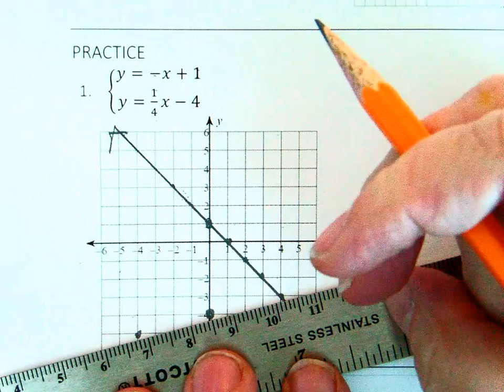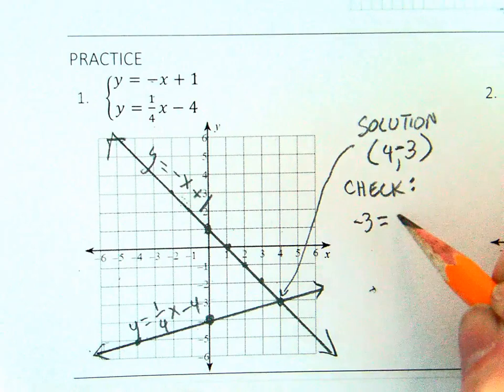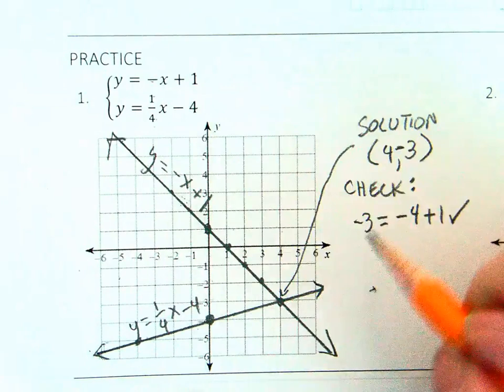The solution is the point of intersection at 4, negative 3. To check your solution, input the values into both equations. If both are true, the point is the solution. If not, recheck the accuracy of your graphs.